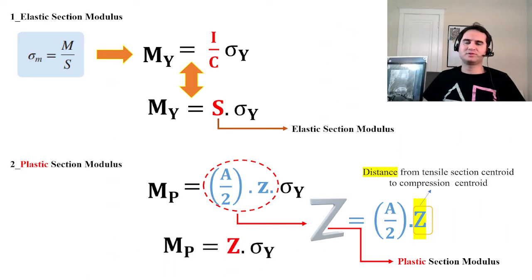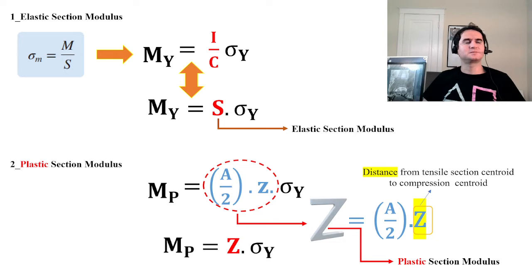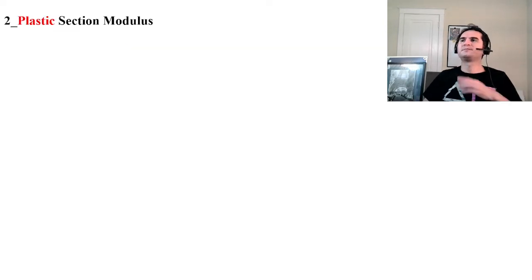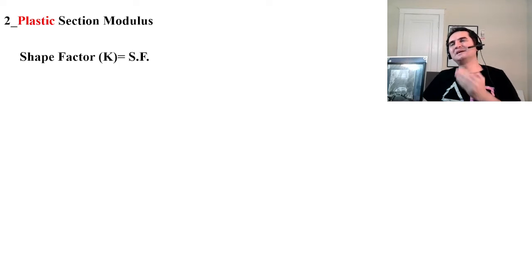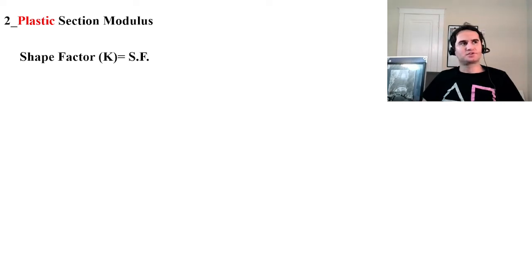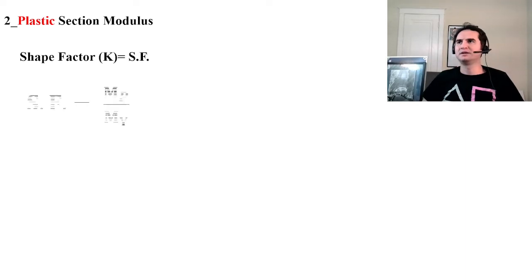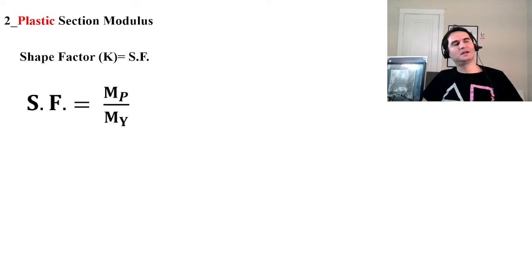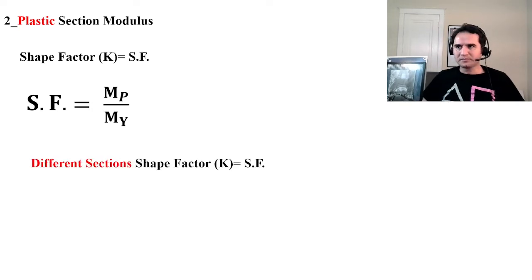One can say plastic moment equals capital Z times sigma_Y, because A/2 times lowercase z is the plastic section modulus, capital Z. In plastic section modulus, we define a shape factor K (also written SF), which is the ratio of plastic moment to elastic moment. We have different shape factors for different shapes.